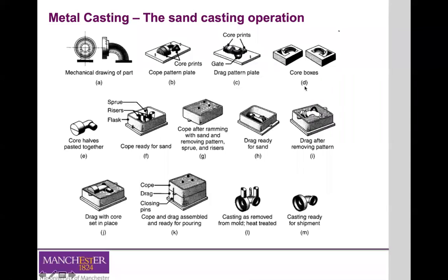To summarize the steps of sand casting: it starts with the mechanical drawing of your parts. Patterns are placed in the cope and drag — the top and bottom halves of the molds. If there are internal cavities, cores are placed after removing the patterns. Sand is filled in, the two halves are joined, and material is poured in molten state into the molds and allowed to solidify. Once completely solidified, the cope is removed, all running channels are cut, and if needed, post treatments such as surface finishing are applied to the final parts.